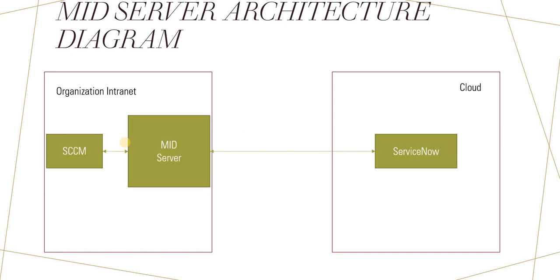For that, we will have a MID server, which is the service we discussed earlier. We install that MID server on a server within the organization's intranet, and as soon as we install it, we give it the name of the ServiceNow instance it should be related to. To see how to install a MID server, please click on the top right corner. Once installed, it can read data from SCCM because it is located within the intranet — no firewall issue. MID server is a trusted source, and it has a direct connection with ServiceNow, so it can transfer that data into ServiceNow as well.